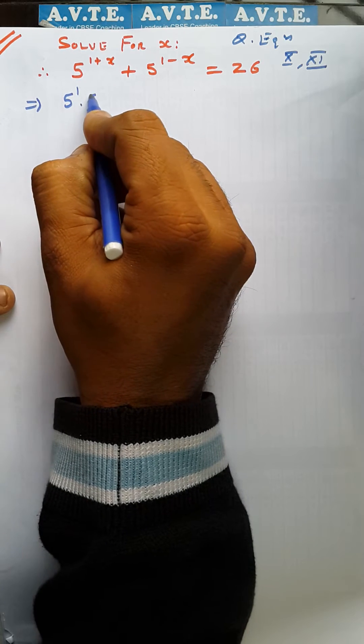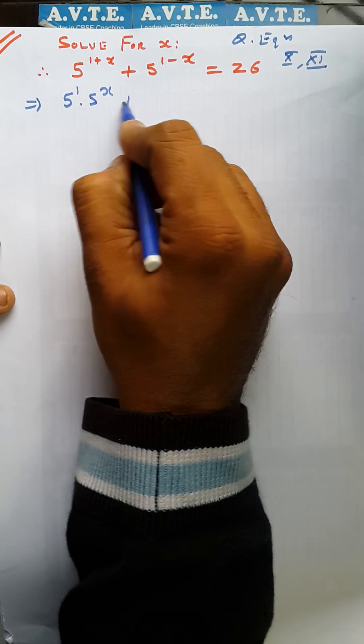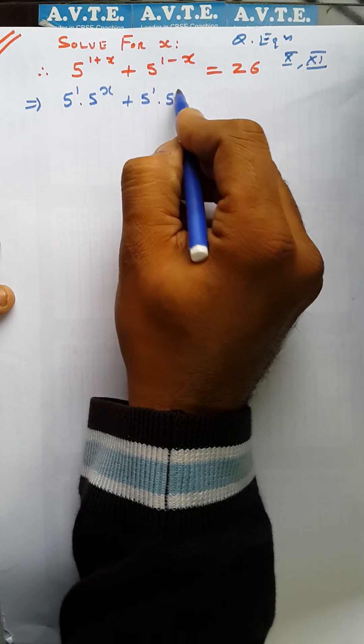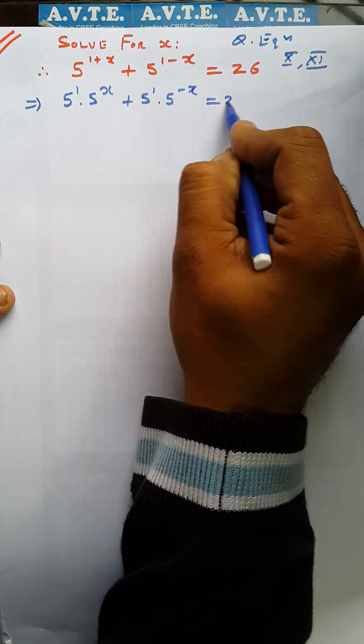5 raised to the power 1 times 5 raised to the power x plus 5 raised to the power 1 times 5 raised to the power minus x is equal to 26.